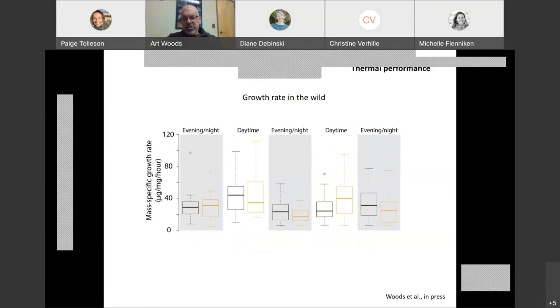We also measured growth rate in the wild and maybe for the interest of time, I won't spend much on this slide except to say that there was really no difference in growth rate between the sunny leaves and the experimentally shaded leaves. We think that again reflects the complexity of these aspen canopies and the very brief excursions to high temperatures.